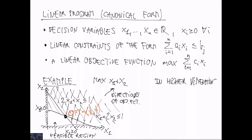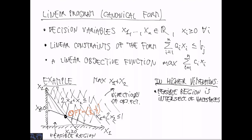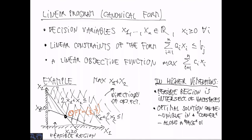Of course, most of the time we work with higher-dimensional linear programs, but the intuition carries over. A feasible region is in general an intersection of half spaces corresponding to the constraints. An optimal solution can either be at a vertex—the intersection of n half spaces, a corner, in which case it is unique—or along a face of the polytope, meaning there are many optimal solutions.